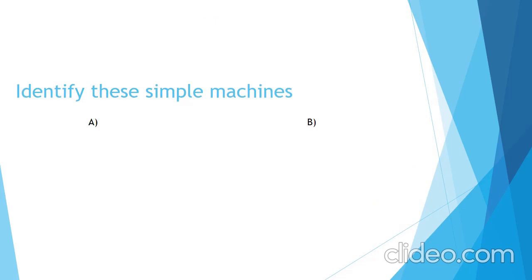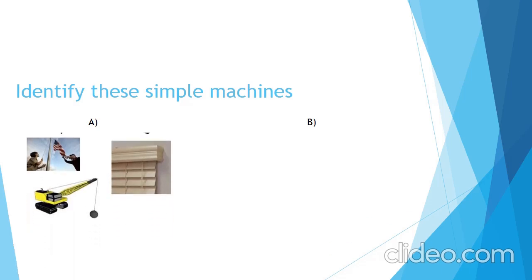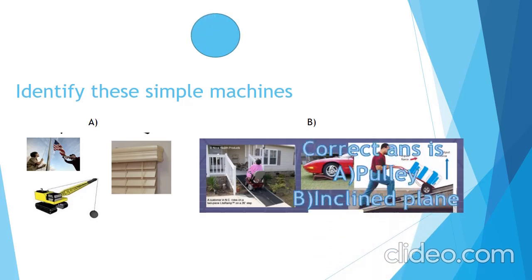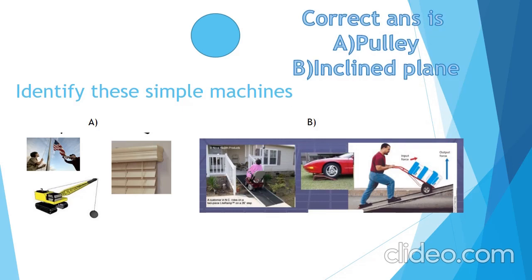Identify these types of simple machines. There is picture A, picture B, and your time starts now. A is pulley and B is inclined plane.